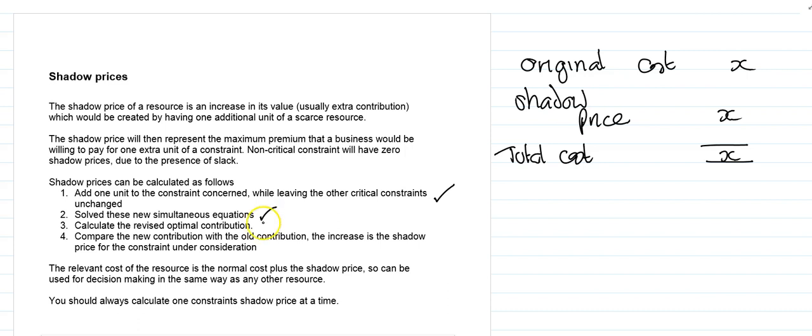Calculate the revised optimal contribution and then compare that contribution with the old one. The increase is the shadow price for the constraint under consideration.